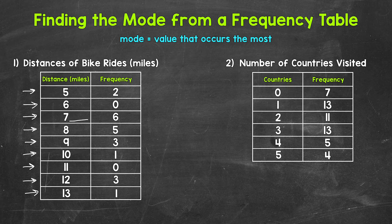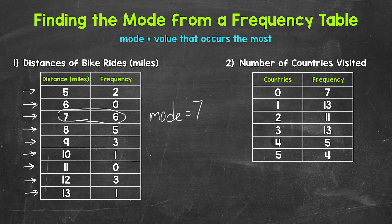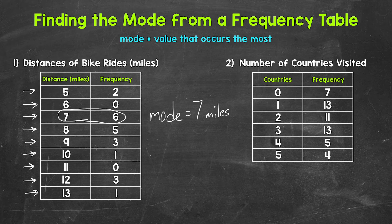That means that 7 miles occurred the most 6 times. So our mode is 7. And we can label this miles. So the most frequent distance, the distance that occurred the most, was 7 miles. So that's our mode.